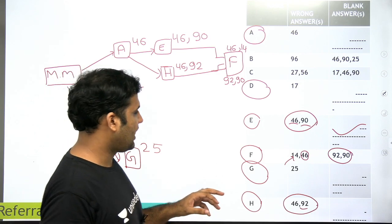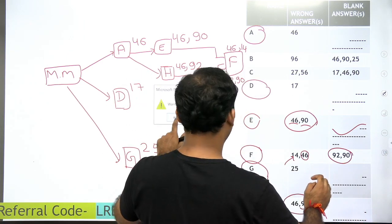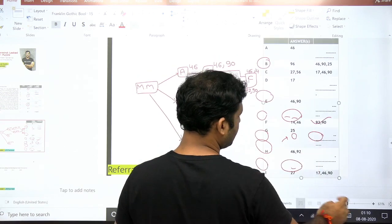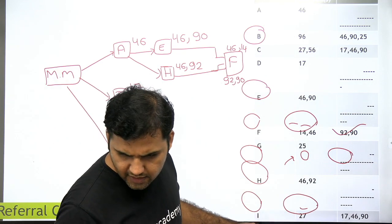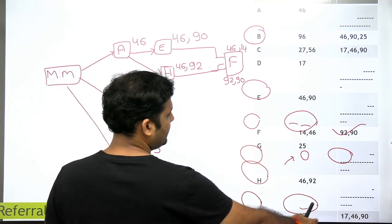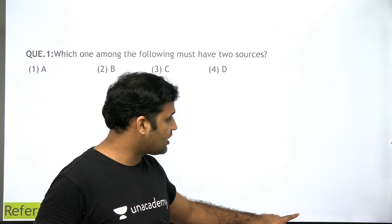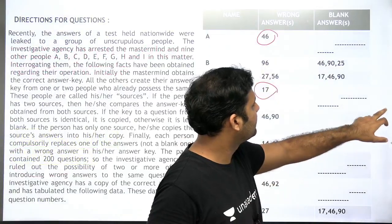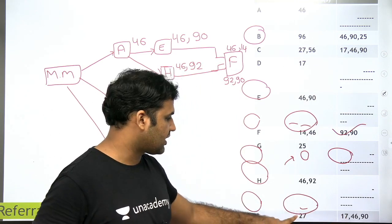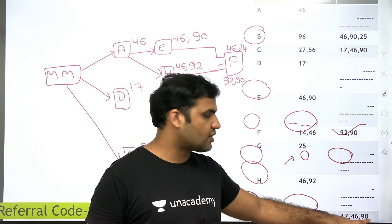Now we are left with B, C, and I. I has question 27 wrong, and questions 17, 46, and 90 are blank. If only one question is wrong, that means I introduced question 27 as wrong themselves. I left 17, 46, and 90 blank. Looking at E and D — E has questions 46 and 90 wrong, and D has question 17 wrong. So if a person takes the answer key from both E and D, the answers for 17, 46, and 90 would not match — causing them to be left blank.